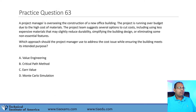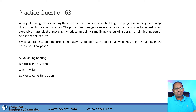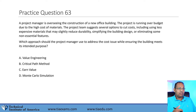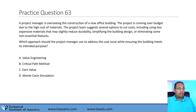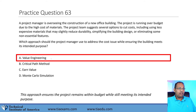Question 63. The project manager is overseeing a construction project running over budget due to high material costs. The team suggests options to cut costs: using cheaper materials that may reduce durability, simplifying the building design, or eliminating non-essential features. Which approach should the project manager use to address costs while ensuring the building meets its intended purpose? This is a definition question. The best answer is value engineering.